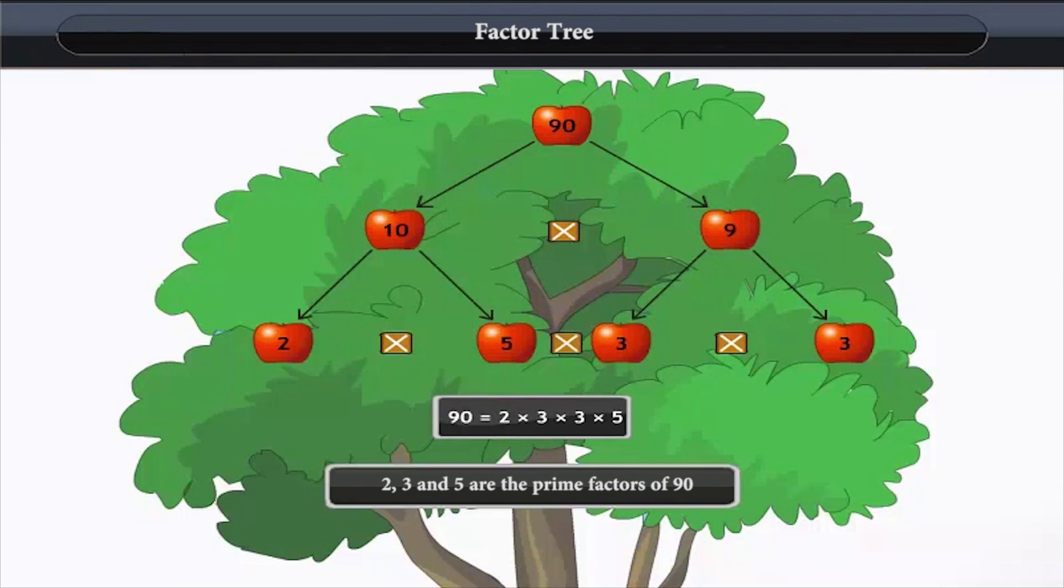Moreover, 2 multiplied by 3 multiplied by 3 multiplied by 5 are the prime factors of 90. Let us take another example.